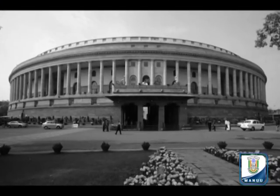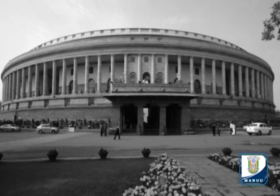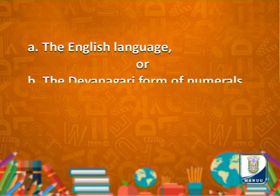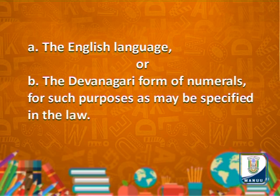Notwithstanding anything in this article, Parliament may, by law, provide for the use after the said period of fifteen years of the English language or the Devanagari form of numerals for such purposes as may be specified in the law. So, in Article 343, Hindi is declared as the official language of the Union and the status of English as an official language is extended for fifteen years. But still today, English remains the official language of the Union because of its national and international importance.